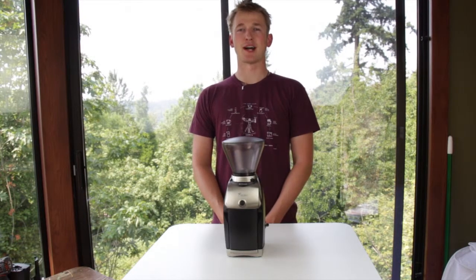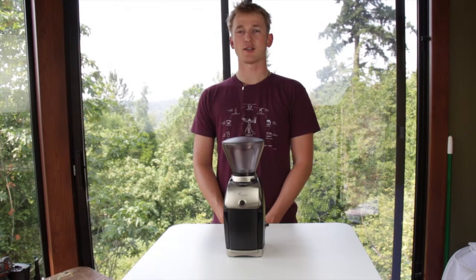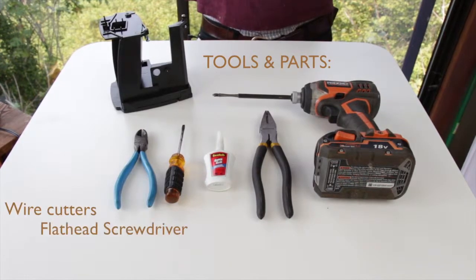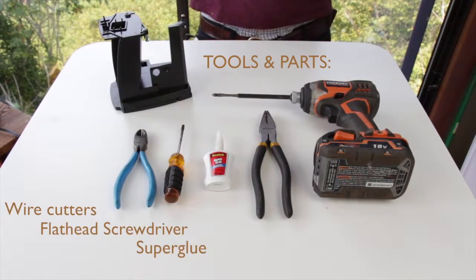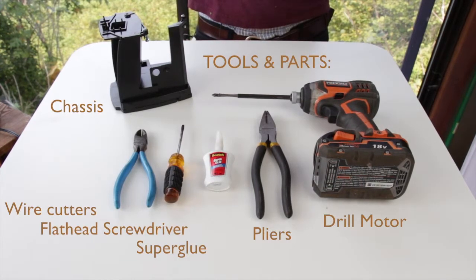Hi, I'm Pierce Jens with Baratza support. Today I'm going to show you how to change the chassis on your conical burr coffee grinder. Let's get to it. The tools we're going to use today are wire cutters, a flat head screwdriver, super glue, pliers, a driller Phillips screwdriver, and of course the new chassis.